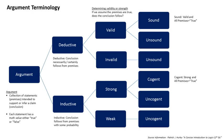Hume's skepticism rests entirely upon his rejection of the principle of induction. The principle of induction, as applied to causation, says that if A has been found very often accompanied or followed by B, then it is probable that on the next occasion on which A is observed, it will be accompanied or followed by B. If the principle is to be adequate, a sufficient number of instances must make the probability not far short of certainty. If this principle is true, then the causal inferences which Hume rejects are valid — not indeed as giving certainty, but as giving a sufficient probability for practical purposes. If this principle is not true, every attempt to arrive at general scientific laws from particular observations is fallacious, and Hume's skepticism is inescapable for an empiricist. The principle itself cannot, without circularity, be inferred from observed uniformities, since it is required to justify any such inference.